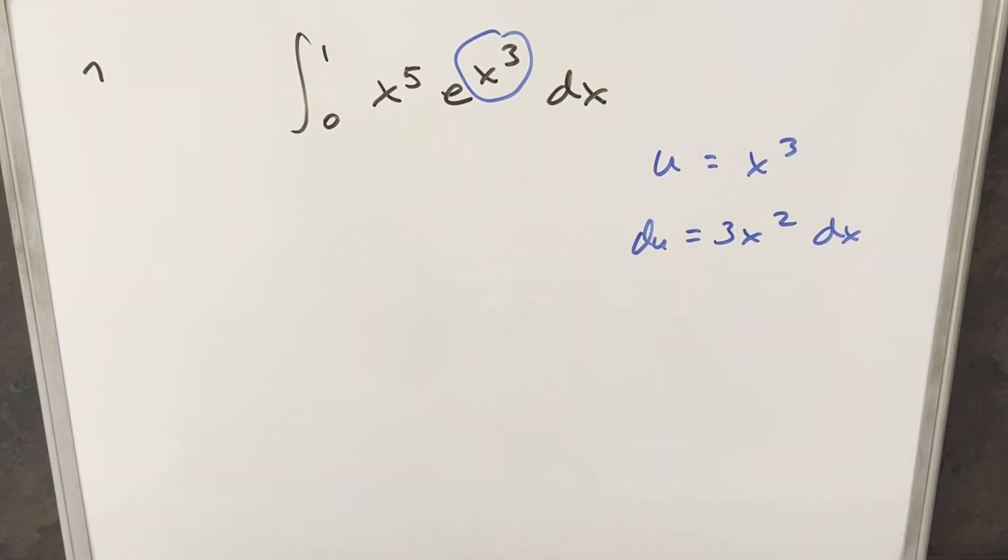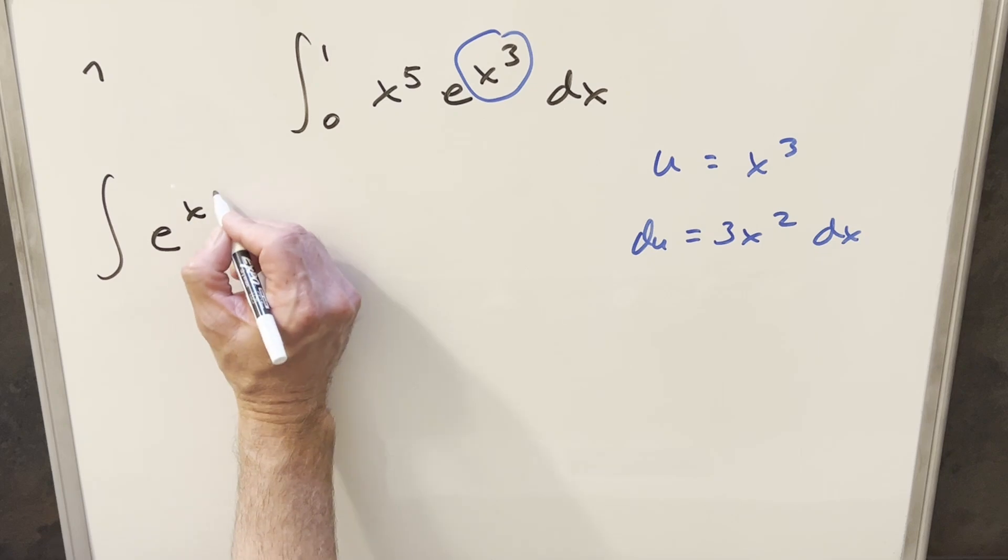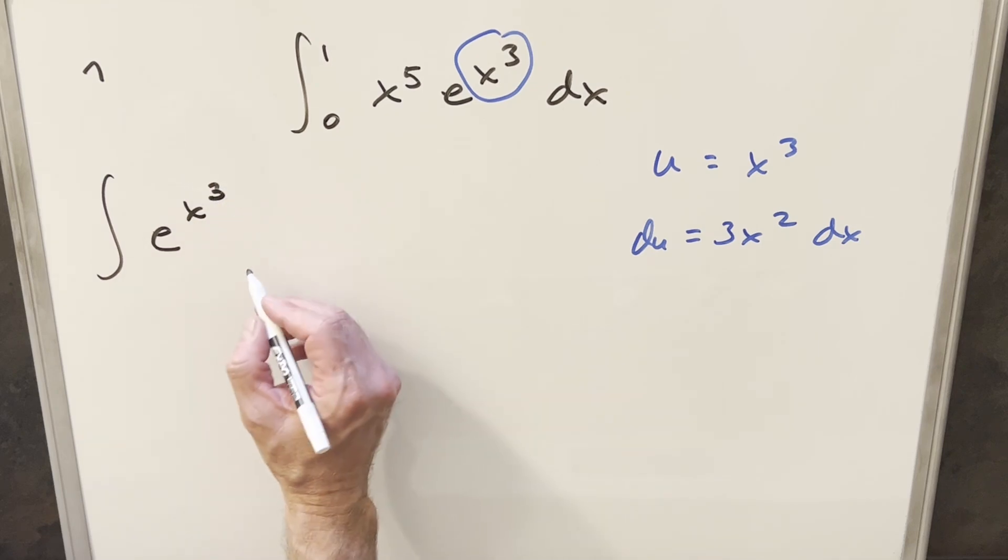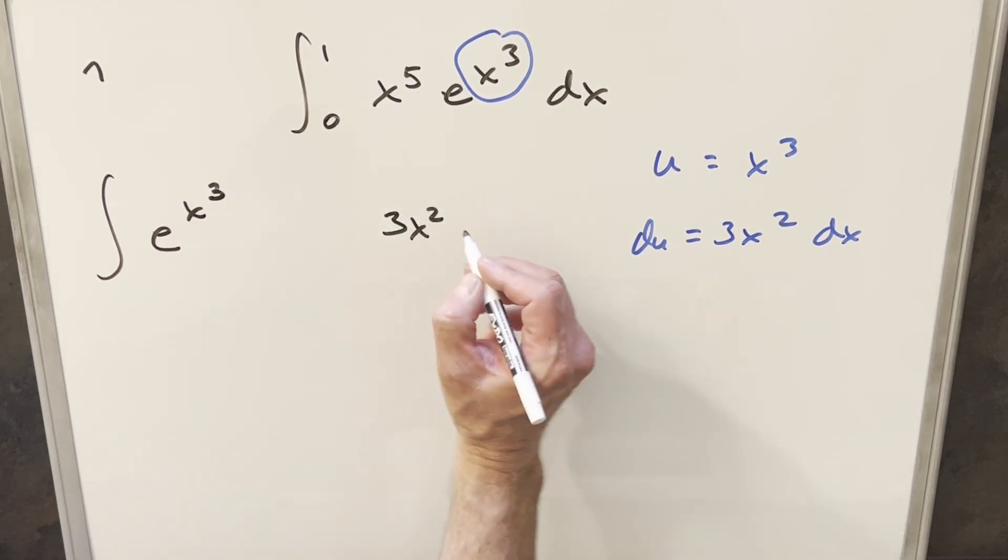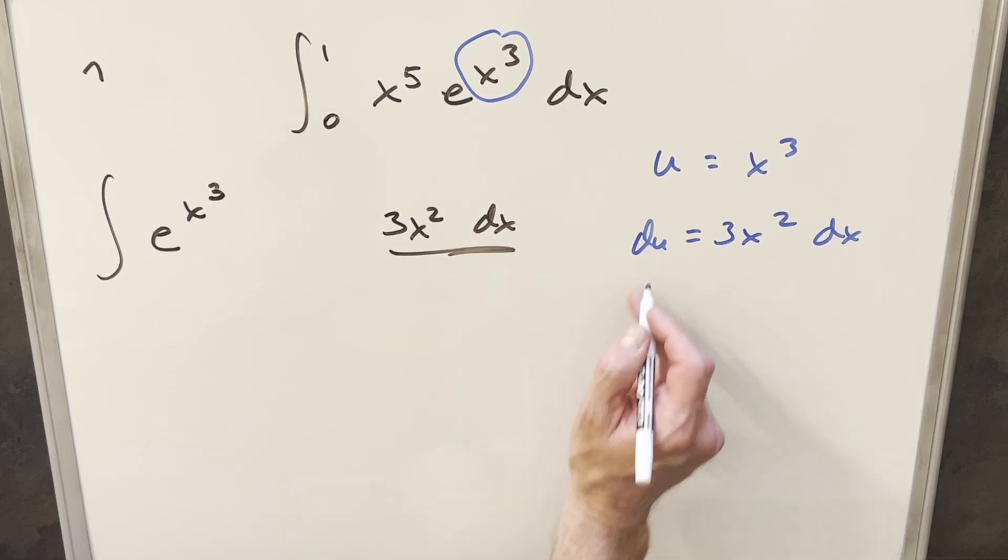And actually, before I do this substitution, I'm actually going to break this up and just try to set up this substitution. Because we don't have 3x squared anymore, so I want to create that. So I'm going to kind of reorder this, and first we'll bring our e x cubed first. And then I'm going to create this at the end as 3x squared dx, just because that's going to be our du value.